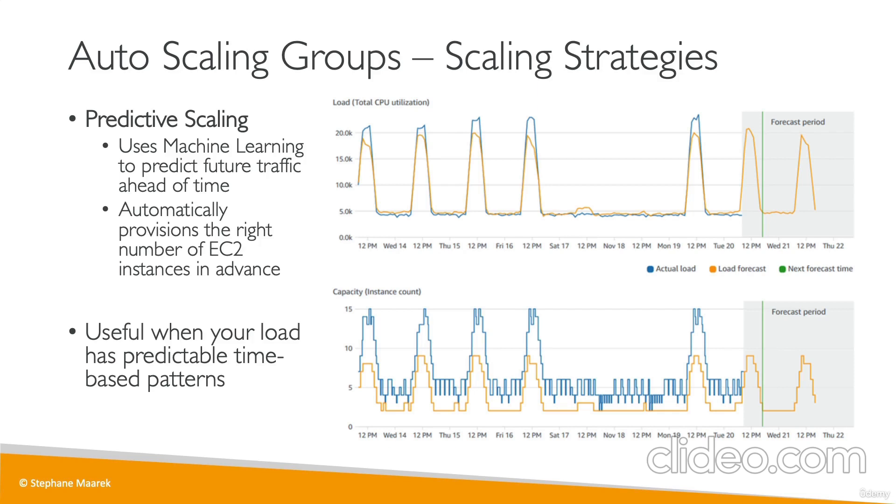Finally, predictive scaling uses machine learning to predict future traffic ahead of time, looking at past traffic patterns to forecast load. It automatically provisions the right number of EC2 instances in advance to match predicted demand — very helpful for time-based patterns where you want hands-off, ML-inspired scaling.